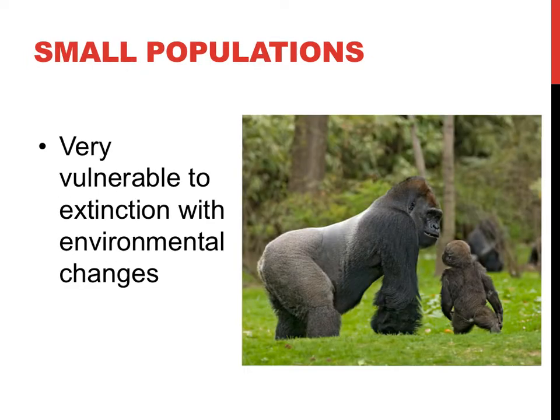Smaller populations are less able to adapt to changing environmental conditions, making them more susceptible to extinction. With a smaller population and a shallow gene pool, there is also a greater chance to acquire recessive genetic disorders due to inbreeding. Small populations can also be very susceptible to specific diseases. These topics are explained further in units on genetics and evolution. A separate video entitled Conservation Ecology will discuss populations that are very small in size, such as the endangered western lowland gorilla shown in this picture.